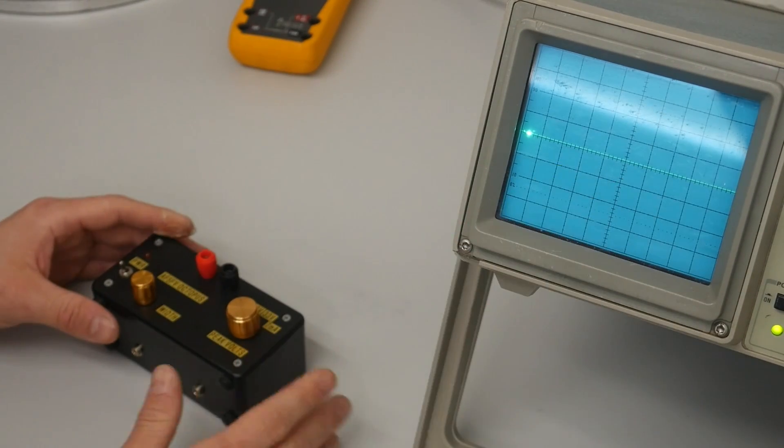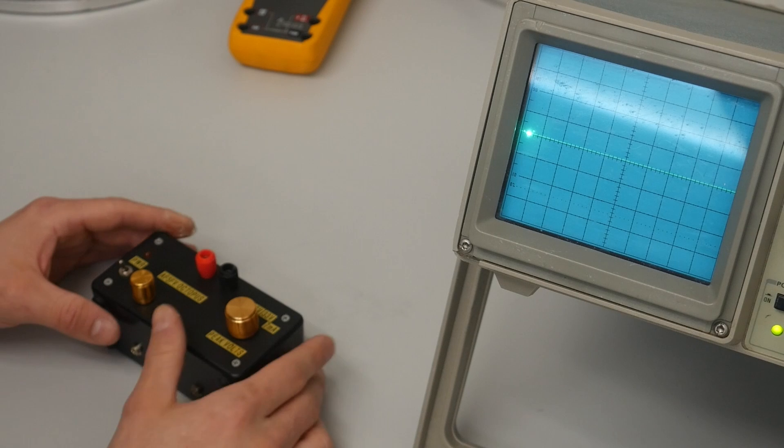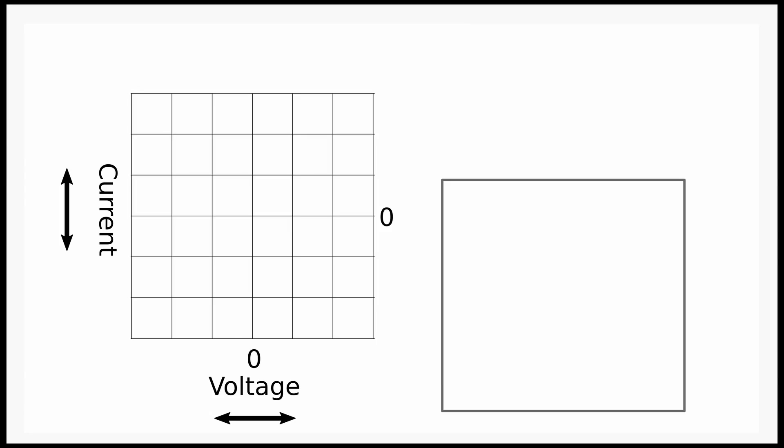Notice the X-axis, left and right, represents voltage with zero volts in the center. As the curve trace output sweeps from negative to positive, any voltage seen in the load will show left to right.